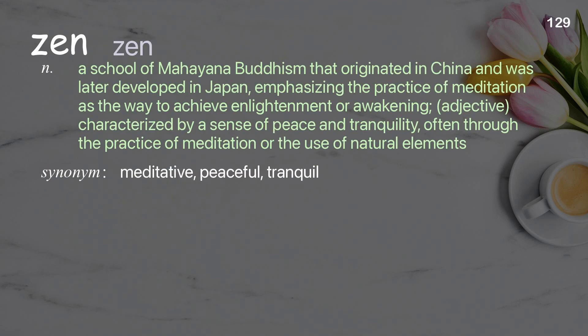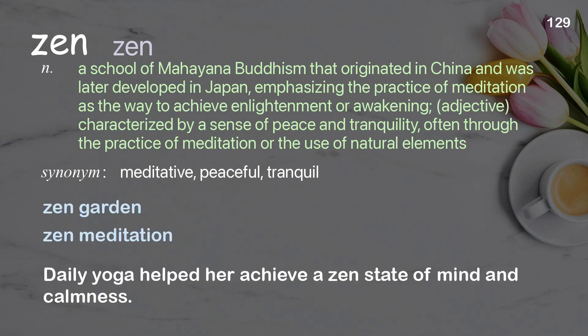Zen: a school of Mahayana Buddhism that originated in China and was later developed in Japan, emphasizing the practice of meditation as the way to achieve enlightenment or awakening; adjective: characterized by a sense of peace and tranquility. Examples: zen garden, zen meditation. Daily yoga helped her achieve a zen state of mind and calmness.